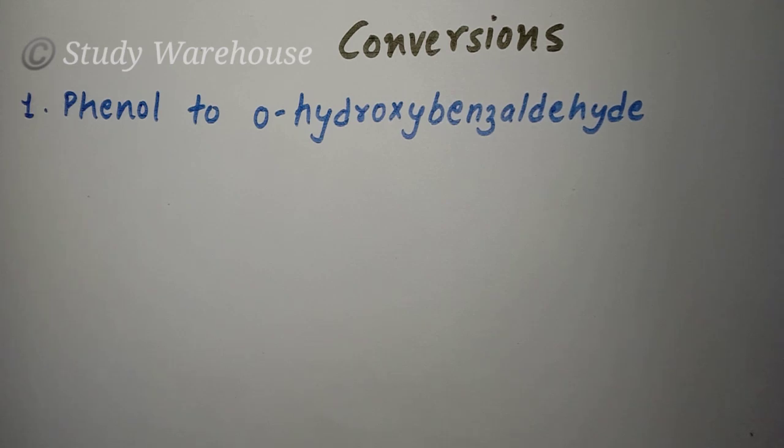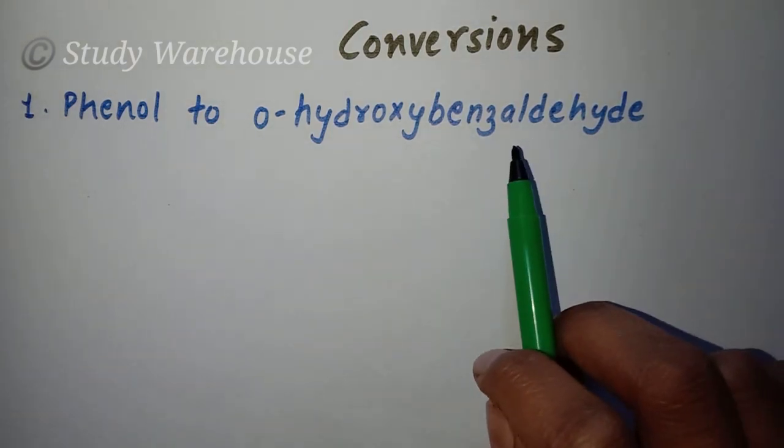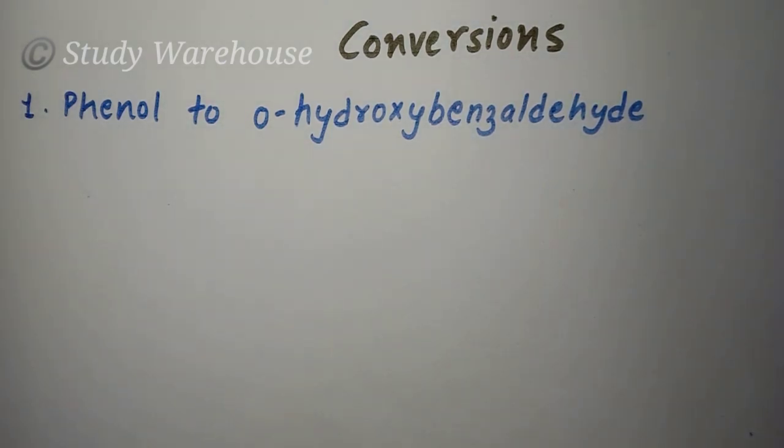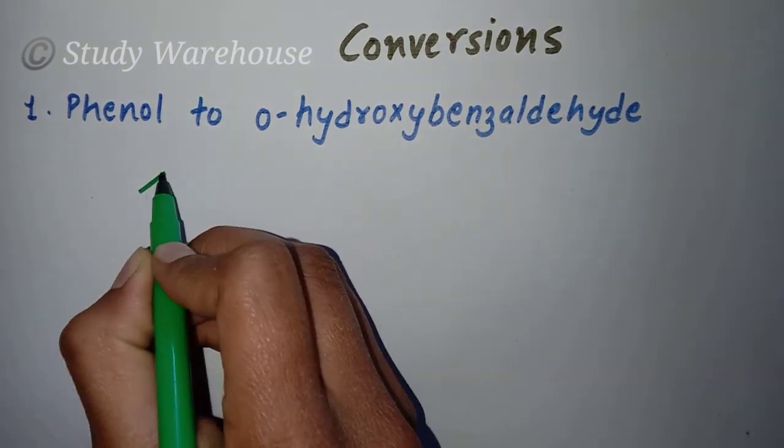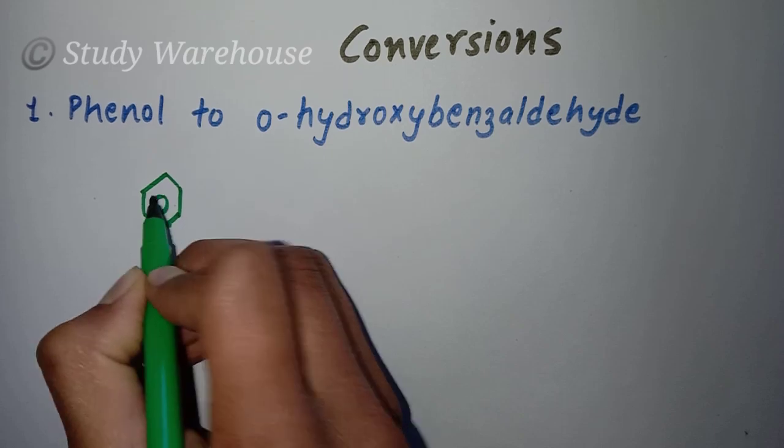The important conversion reactions which have come in previous question papers, I will tell you. First of all, we have to change phenol to ortho-hydroxybenzaldehyde. The name reactions are very important. Here you will use Reimer-Tiemann reaction. You can also be given salicylic aldehyde.